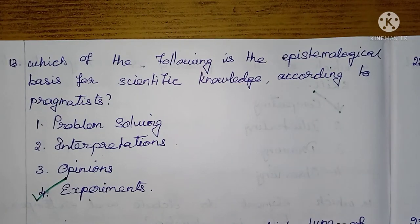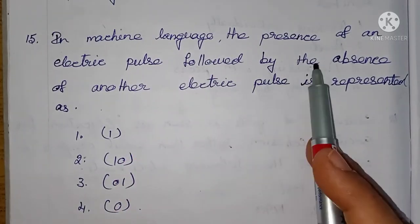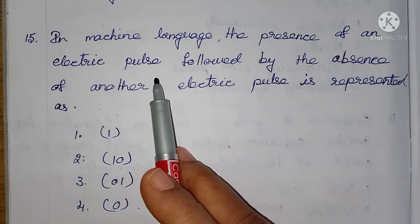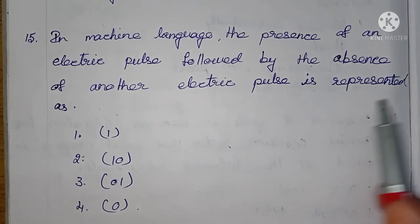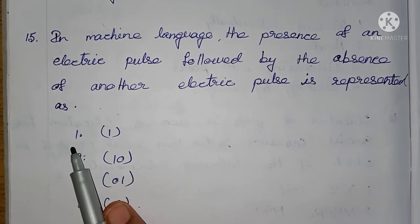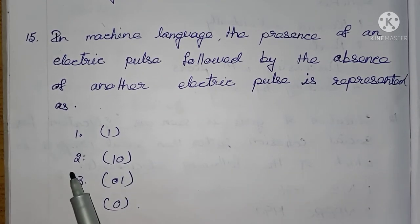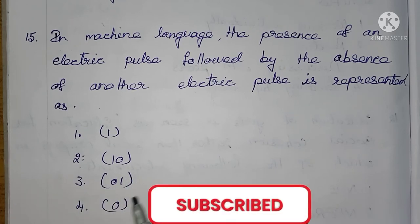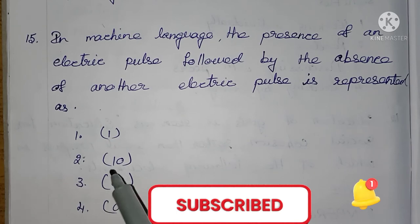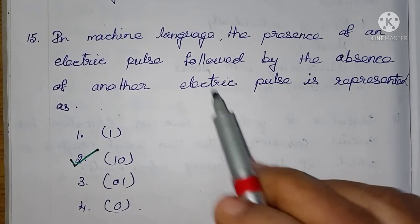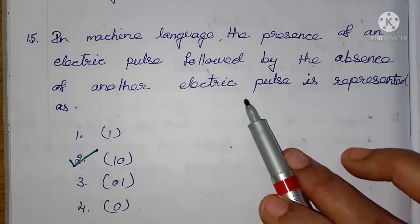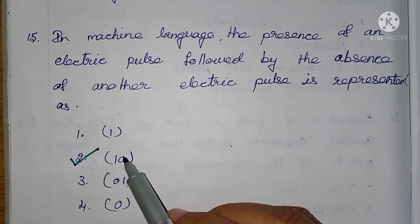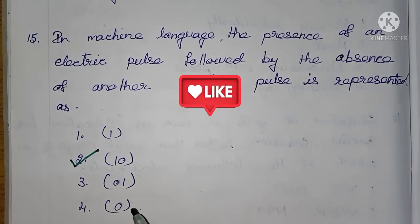In machine language, the presence of an electric pulse followed by the absence of another electric pulse is represented as — 1. Answer is 1, 2. Second option 1,0, 3. Third option 0,1, 4. Fourth option 0. The right answer is 1,0 — first electric pulse is present, so it is 1; second electric pulse is absent, so it is 0. Therefore 1,0 is the right answer.